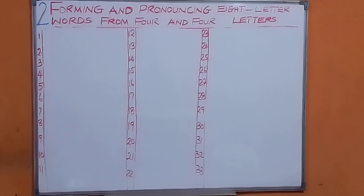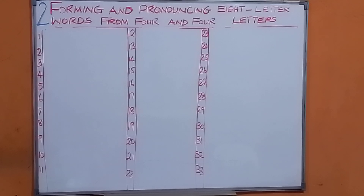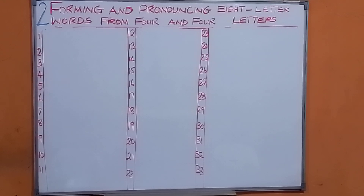Welcome to a series on forming and pronouncing eight letter words from four and four — joining four and four to form eight letter words. We have drawn four letter words from three before. Now we're going to see how simple it is to use four and four to form eight letter words. We've done four series starting with the letter A. We're going to take the second series of eight letter words starting with the letter B by joining four and four to form them. Let's start.